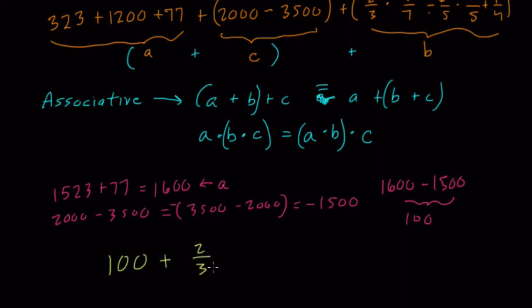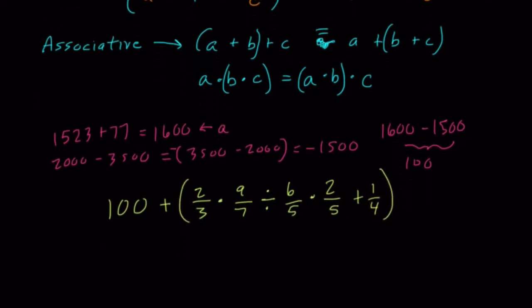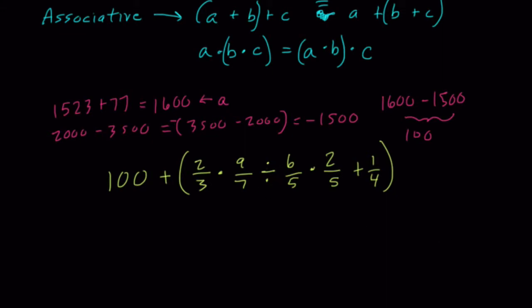So here, this whole chunk of fractions in the parentheses, we're going to write it out, and then we're going to break this thing down. So, what do we do? Well, the first thing I would do is rewrite the division operation to multiplication. Now, when you're dividing by a fraction, you multiply by the reciprocal. So that tells us we're going to get 100 plus, now we have 2 over 3, times 9 over 7. Now, we multiply by 5 over 6. Instead of dividing, multiply by the reciprocal. We flip that fraction. Times 2 over 5, and then plus 1 fourth.